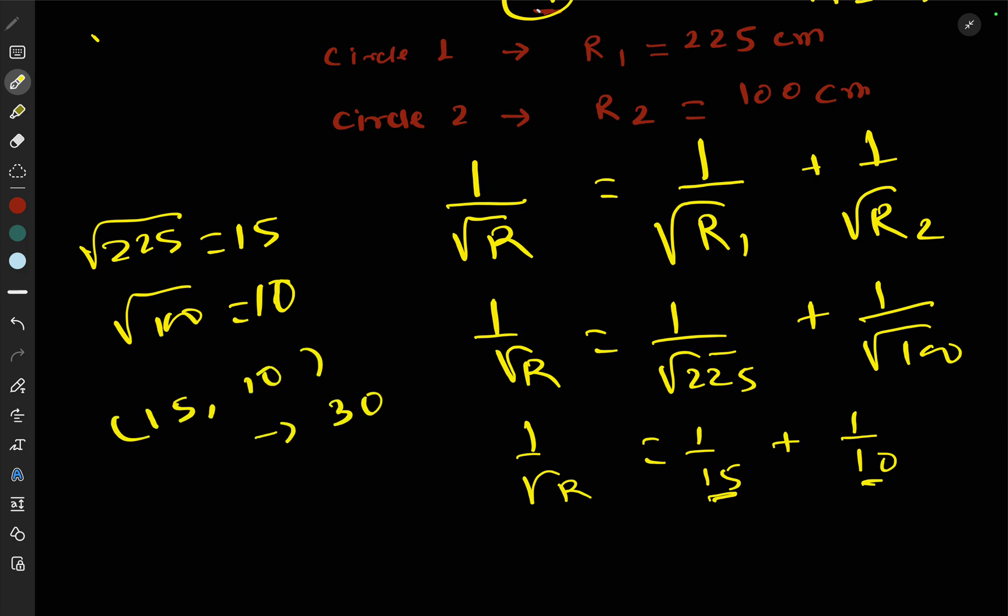We divide 30 by 15 and get 2, which we write in the numerator. Then divide 30 by 10 and get 3 in the numerator. So 1/√R = (2+3)/30 = 5/30 = 1/6.